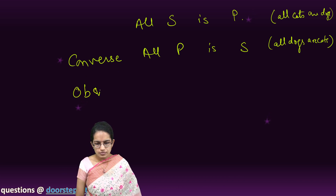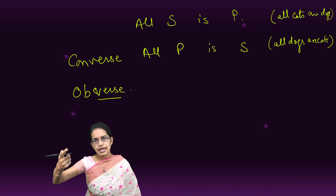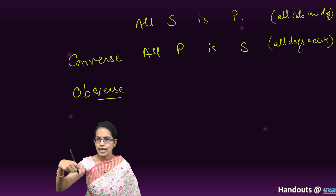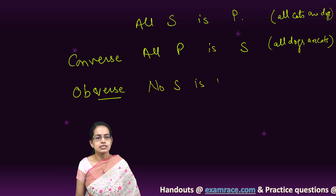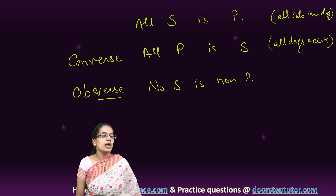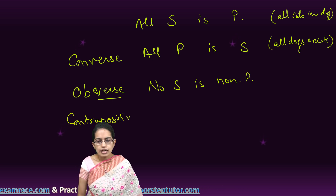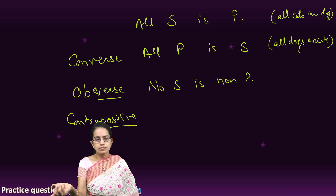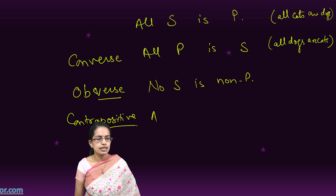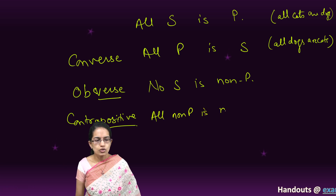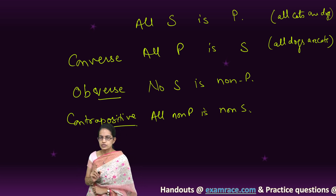Obverse is nothing but negating both the statements. So 'All S is P' becomes 'No S is non-P.' And then I have the contrapositive. Contrapositive is interchanging the positions of P and S with a negation, so I say 'All non-P is non-S.' That is a contrapositive statement.